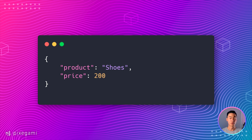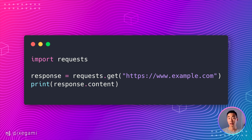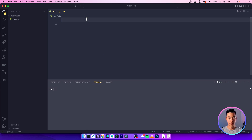Alternatively, if your endpoint isn't a website but an API instead, you might get some JSON data as your content response. Either way, you can use the content attribute of the response object to get this data. Here's an example.